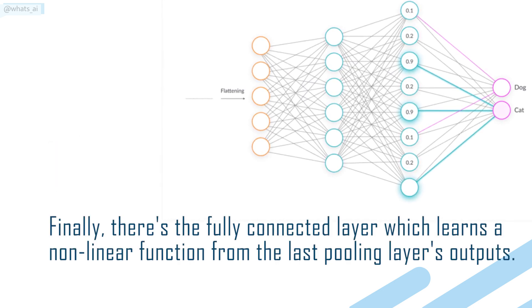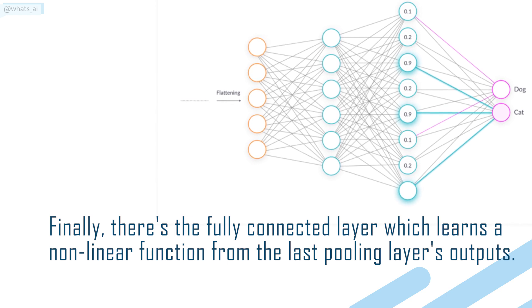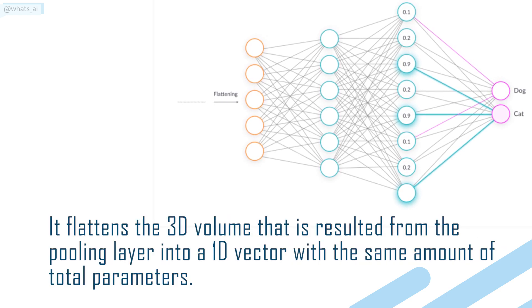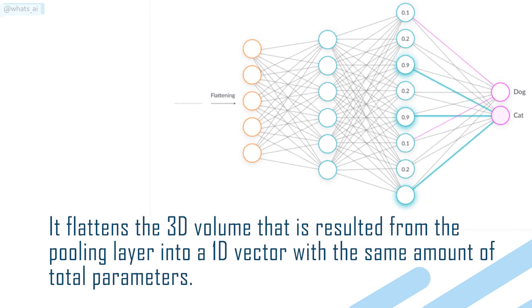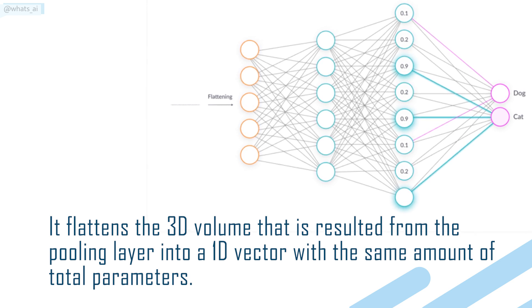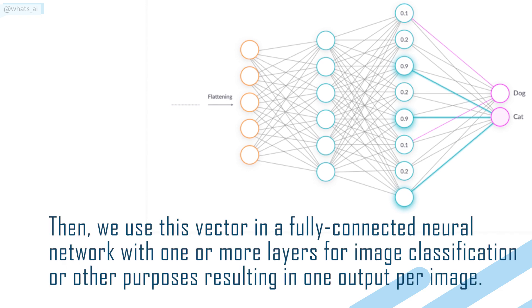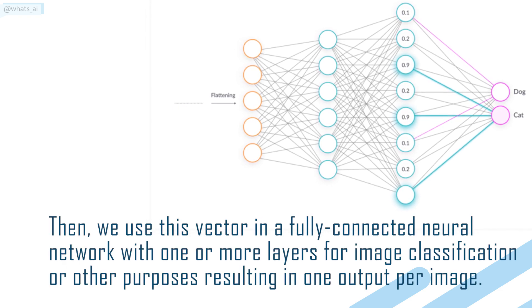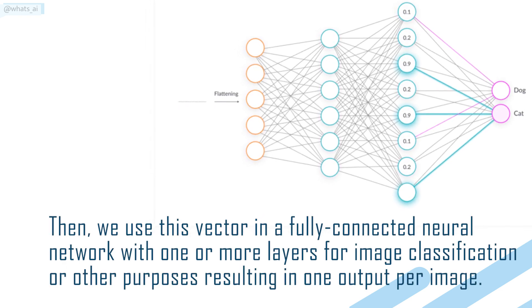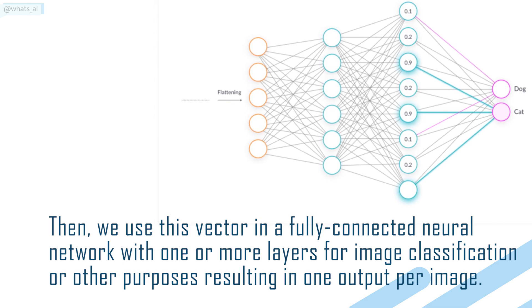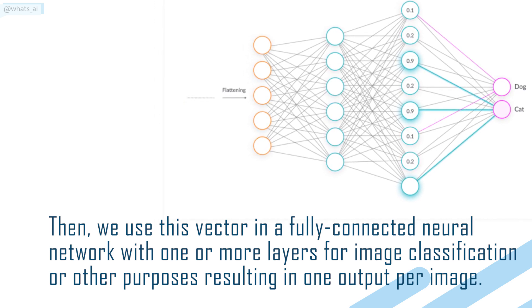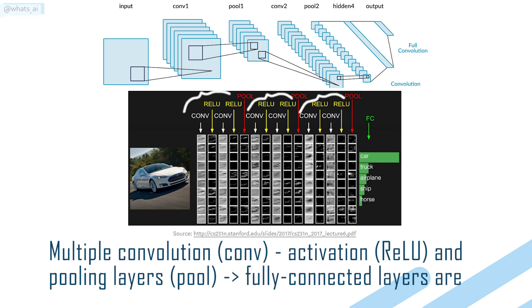Finally, there's the fully connected layer, which learns a non-linear function from the last pooling layer's outputs. It flattens the 3D volume that is resulted from the pooling layer into a 1D vector with the same amount of total parameters. Then, we use this vector in a fully connected neural network with one or more layers for image classification or other purposes, resulting in one output per image.